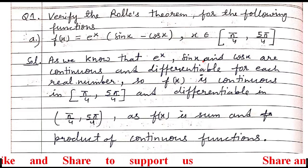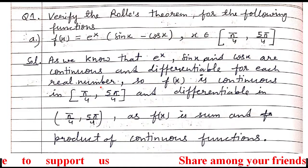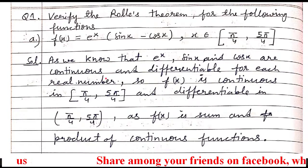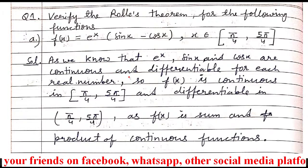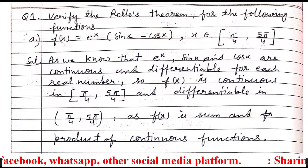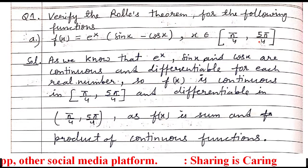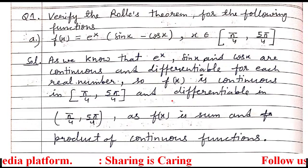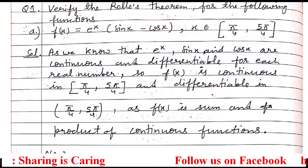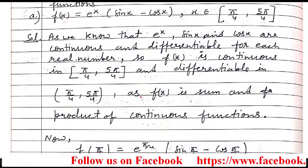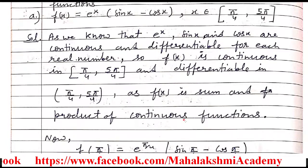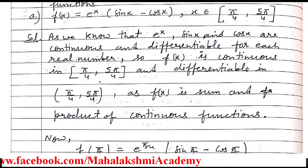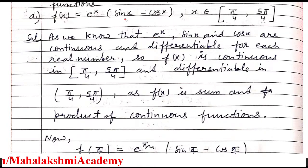As we know that e^x, sin x, and cos x are continuous and differentiable for each real number. These three functions are continuous as well as differentiable for every real number, and that's why for all real numbers in the interval [π/4, 5π/4], these three functions are well defined. That's why f(x) is continuous in the closed interval as well as differentiable in the open interval. So the first two conditions are satisfied, because f(x) is the sum and product of continuous functions.